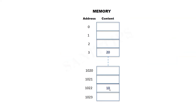Assume that the value 10 is stored in the memory location with address 1022 and 20 in location with address 3. To add these numbers, 20 must be retrieved from this location and 10 must be retrieved from the location at address 1022. However, as humans, we often struggle to remember numerical values, which is why we assign names to these memory locations. For instance, we can name memory location 3 as num1 and location 1022 as num2.